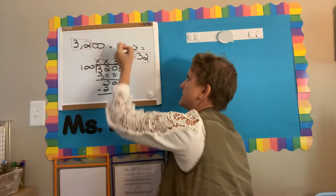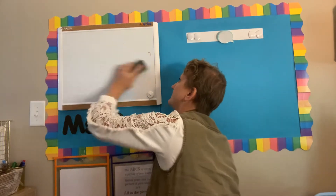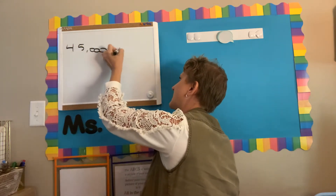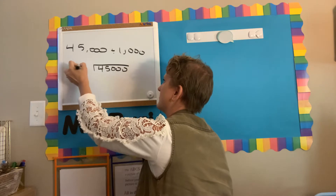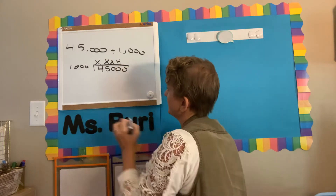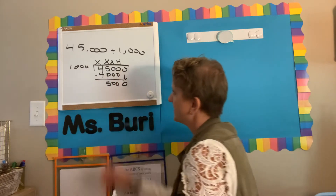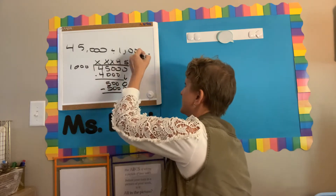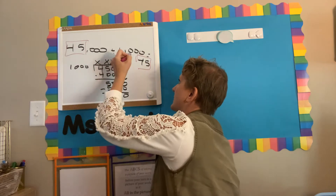Let's say we did 45,000 divided by 1,000. 1,000 does not go into 4, or 45, or 450, but it does go into 4,500 with a remainder of 500. We bring down our 0 — it goes into 5,000 five times with no remainder. So our answer is 45. Again, we have those same digits appearing, there are three zeros here, and we got rid of three zeros.